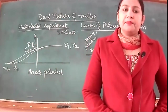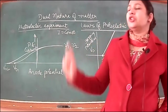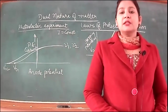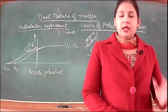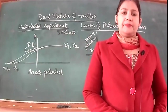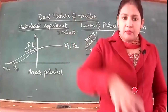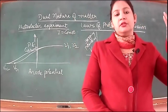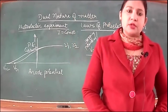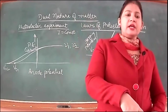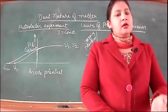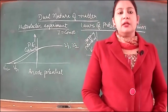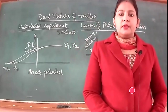Fourth law: photoelectric emission is an instantaneous process. The moment a photon strikes the metal surface, the electron comes out immediately — no time delay. As soon as the photon strikes, the photoelectron will come out.